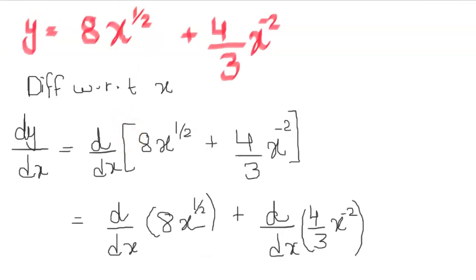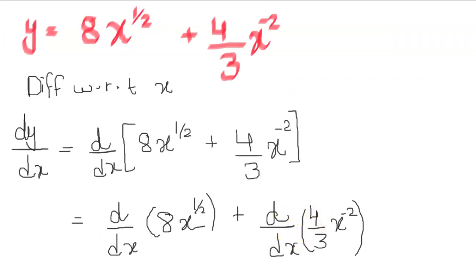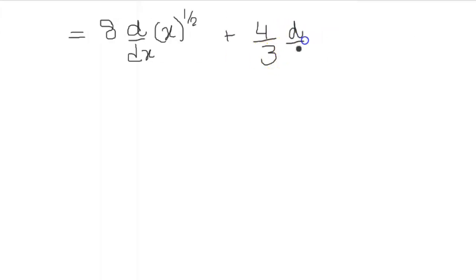The first one, when I differentiate, the 8 comes out already, and I need to differentiate x to the power half. Up to you if you want to put the half outside the bracket or inside the bracket. Plus 4 over 3 comes out just because it's a constant. So constant comes out and x minus 2, d over dx of x minus 2.